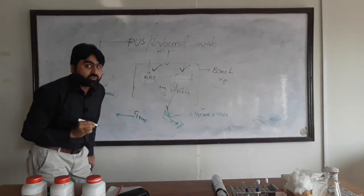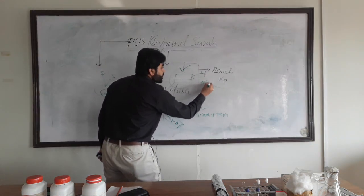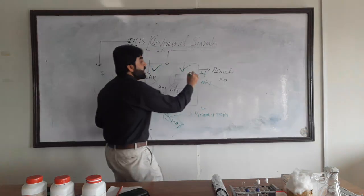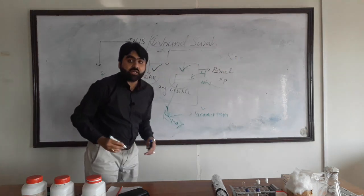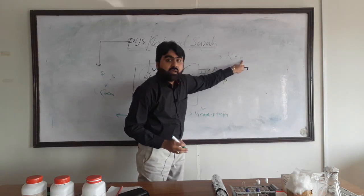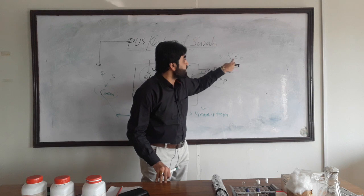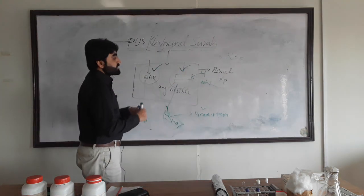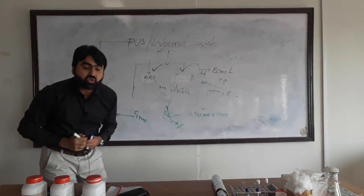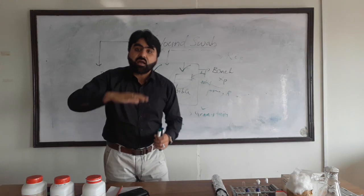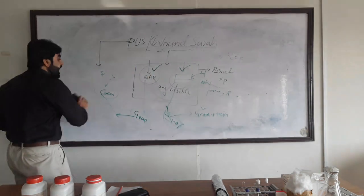Once confirmed as gram-negative rods, focus on the MacConkey agar surface to determine whether this organism is a lactose fermenter or non-lactose fermenter. If it is a lactose fermenter, the possible gram-negative rods are Klebsiella, Enterobacter, and E. coli. If it is a non-lactose fermenter, it could be Pseudomonas, Proteus, or others. These are the bench tools and clues we use for processing different specimens.